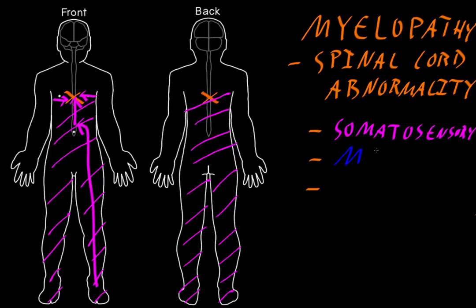You can also have motor abnormalities, and the type can depend on where the lesion is. For the most part with myelopathy, what we're going to see is upper motor neuron abnormalities below the level of the lesion, because the upper motor neuron axons coming down from the brain may not be able to make it through that area of abnormality. All the myotomes — the groups of muscles attached to spinal cord levels below the lesion — may have upper motor neuron abnormalities. If both sides of the spinal cord are affected similarly, this will usually be fairly similar on both sides, which is common because the spinal cord is such a small structure that often an entire level or most of a level is affected together.